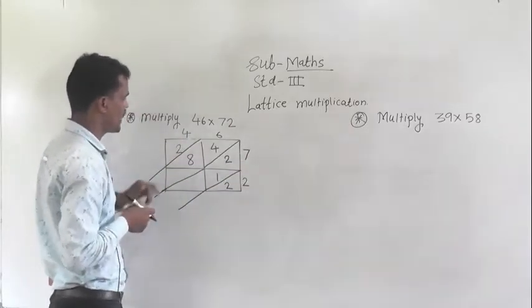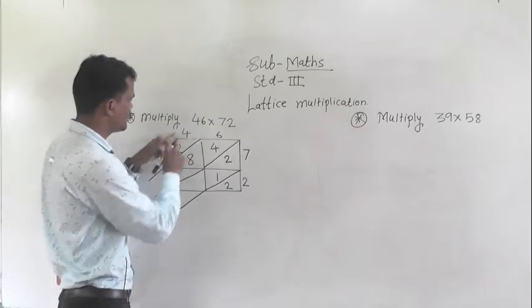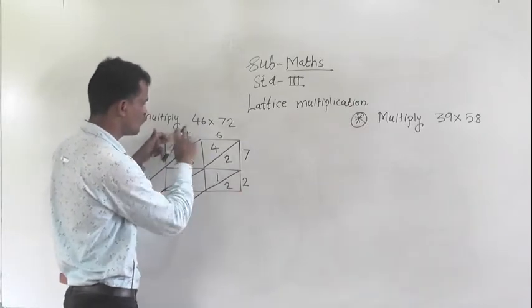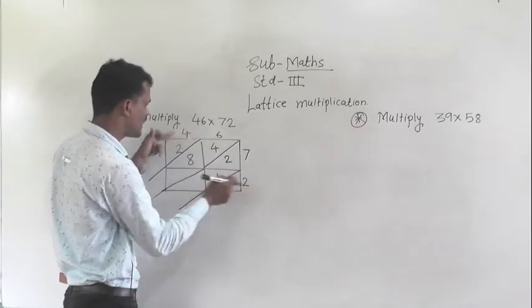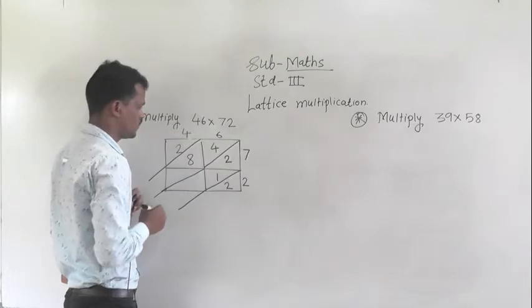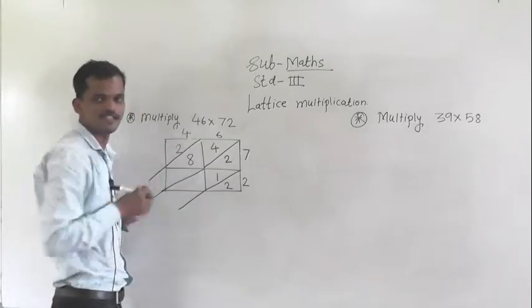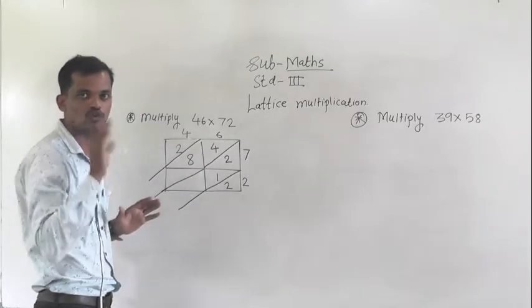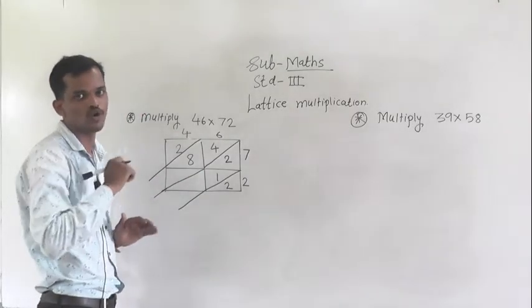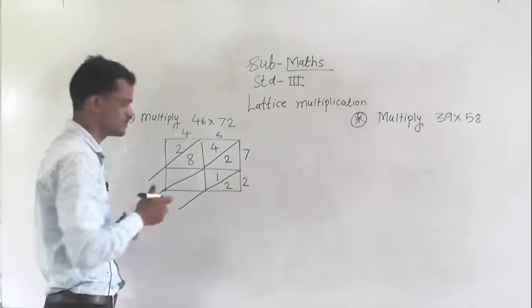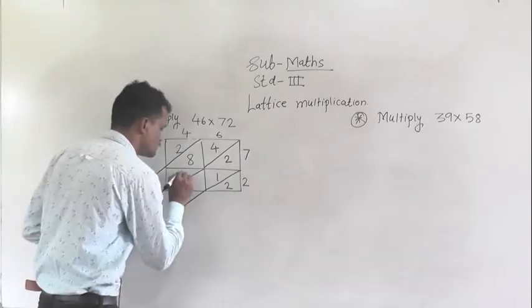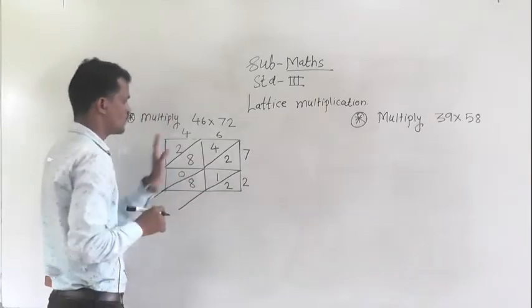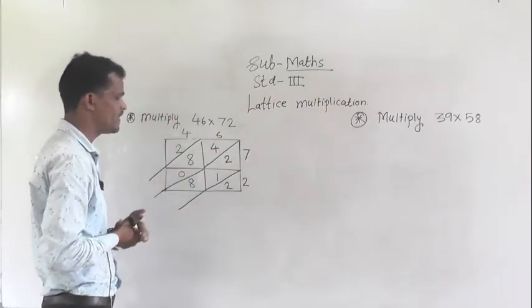And then multiply this 4 by 2. 4 twos are 8. 8 is a single digit number, so write 0, 8. Now we have multiplied.